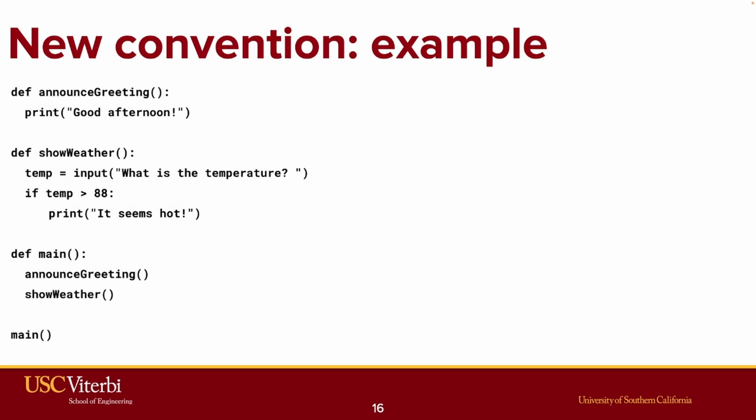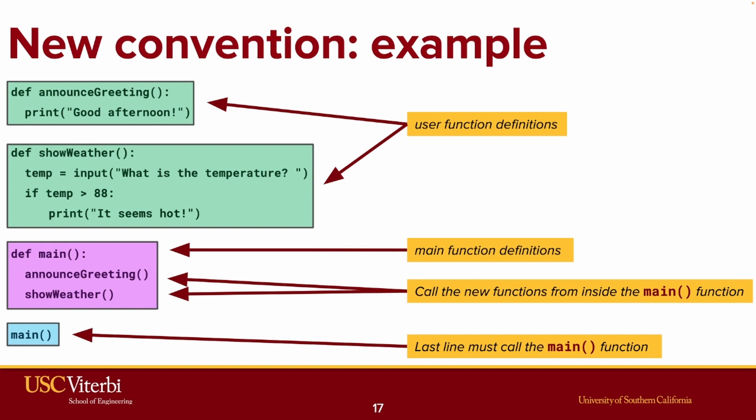Let's look at a larger example that uses several custom functions. This program actually defines three custom functions, one of which is main. And if we look at a more detailed version of this code, you can see that main is called at the end of the code base, as is convention. When main is run, it calls the other custom functions, as you can see in the definition of the main function itself. There are those other two user-defined functions, announce greeting, and show weather.